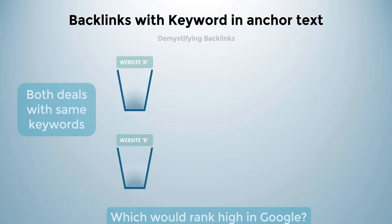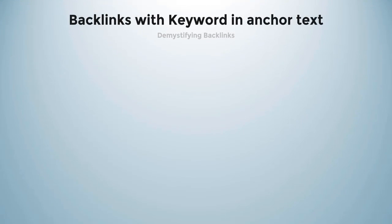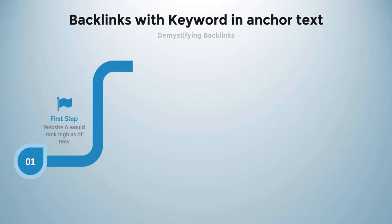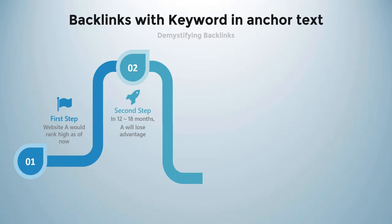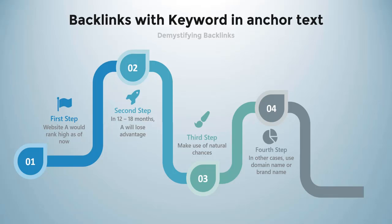To answer the question from the last lecture: website A has a backlink with its keyword as anchor word, and website B has a backlink with its brand name as anchor word. Neglecting all other variables, website A would rank higher as of now. But in 12 to 18 months, website A will lose that advantage, and at that time website B and A will rank equally, meaning the ranking will be decided based on other factors. To conclude, if there's a natural chance of getting a backlink with your entire post or page title as anchor word, you can use that. In all other cases, use your domain name or brand name as anchor word, which will look more natural to Google.